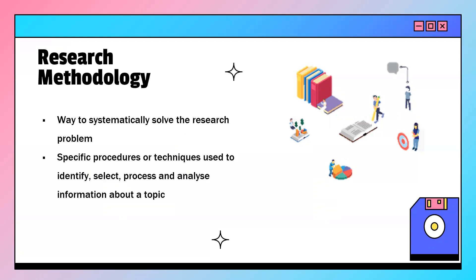For this, we require the specific procedures or techniques that are used to identify, select, process, and analyze information about the topic. So a research methodology is an outline of how a given piece of research is carried out.